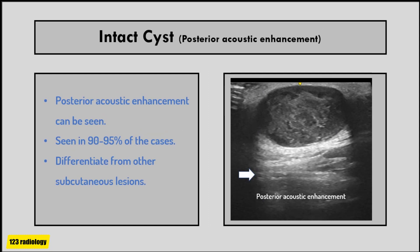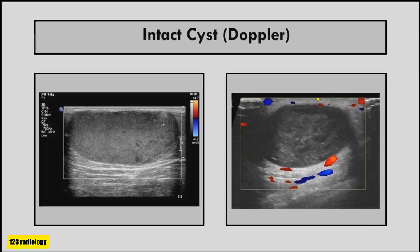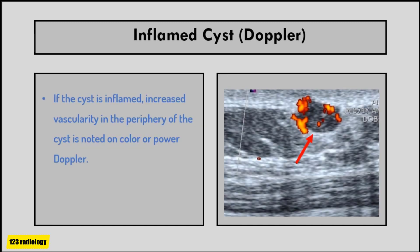Posterior acoustic enhancement is seen in approximately 90 to 95 percent of cases of epidermal inclusion cysts. This is an important characteristic which enables us to differentiate them from other subcutaneous lesions. A noticeable characteristic is that the cyst can communicate with the skin surface through a keratin-filled orifice, the so-called punctum. On color Doppler examination, most cases show no evidence of internal vascularity. If the cyst gets infected, increased vascularity is observed in the periphery of the cyst.